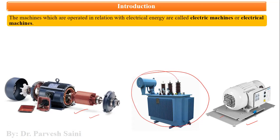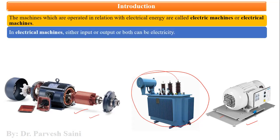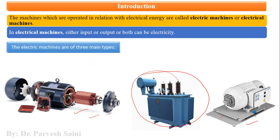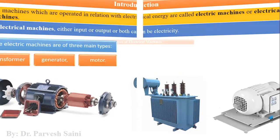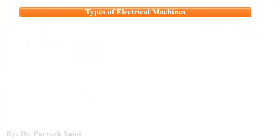Such machines we call electrical machines. So from these pictures, we can understand that broadly, if we classify electrical machines, we have transformers, we have generators, and we have electric motors. Let us go deeper into the classification of electrical machines.